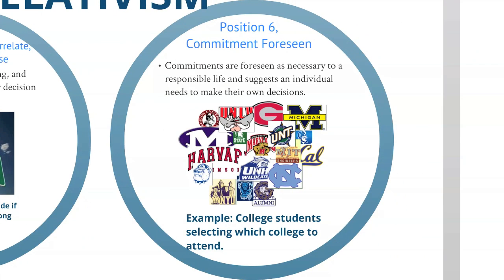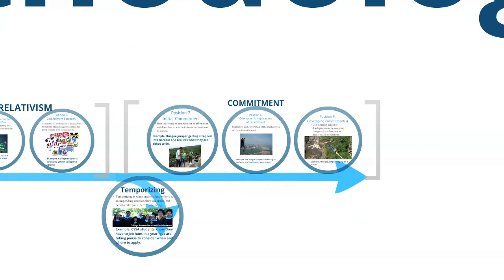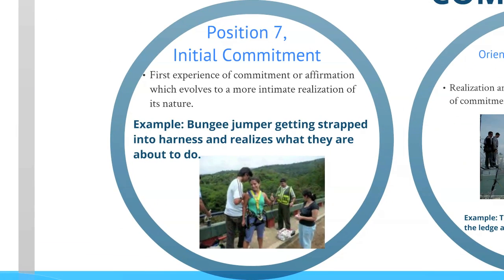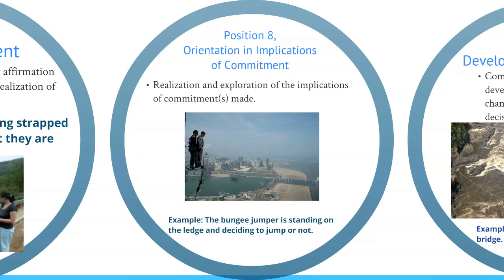Position six is commitment foreseen. An example of this is college students selecting which college to attend. The most mature position is commitment. Position number seven, initial commitment, consists of a bungee jumper getting strapped into a harness and realizing what they are about to do. Position eight is orientation and implications of commitment. Position nine is an example of a bungee jumper standing on a ledge and deciding to jump or not to jump.